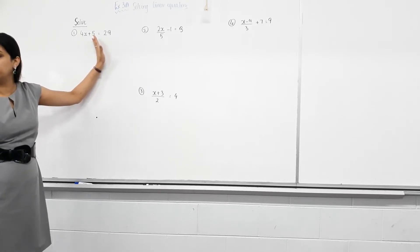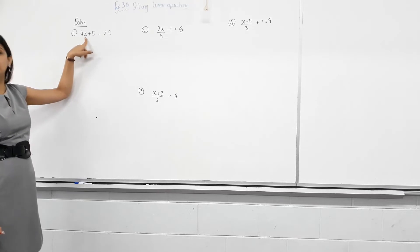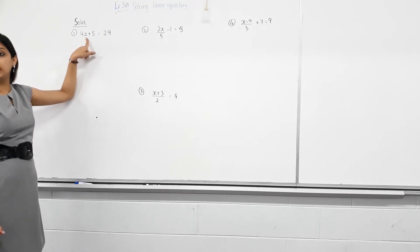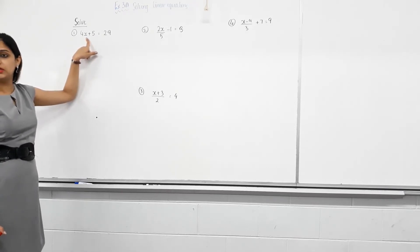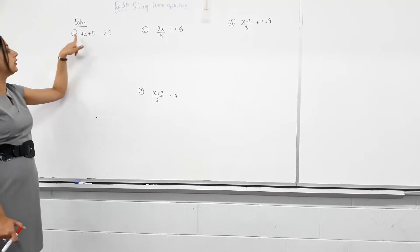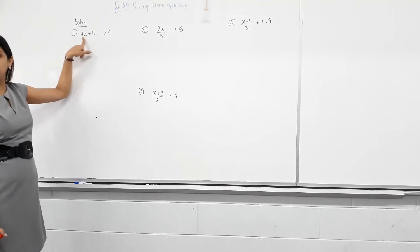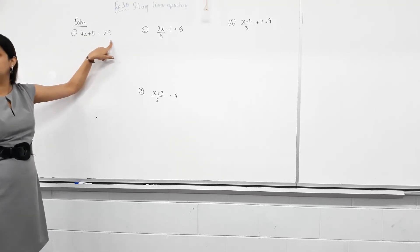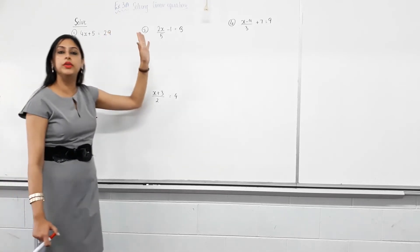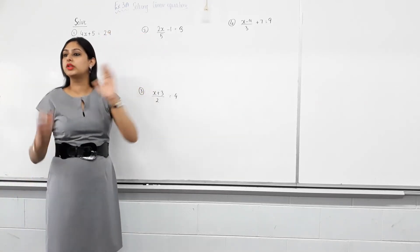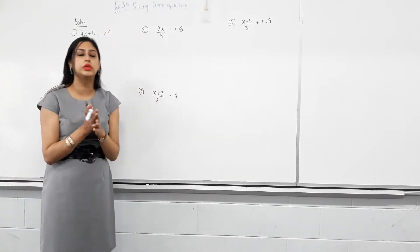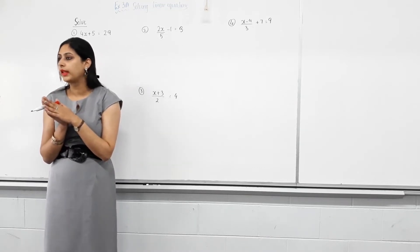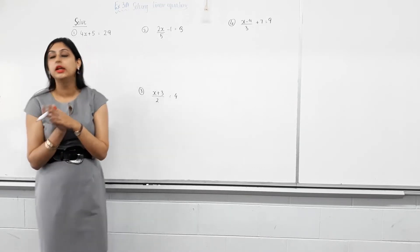Is that clear? So we need to find the value of X in this equation such that — laptops down please, screens down — if we times that by 4 and then add 5, what should it equal? 29. So we need to find the value of the unknown for which the right hand side of the equation is equal to the left hand side. Do we now know what solving means? Yes.